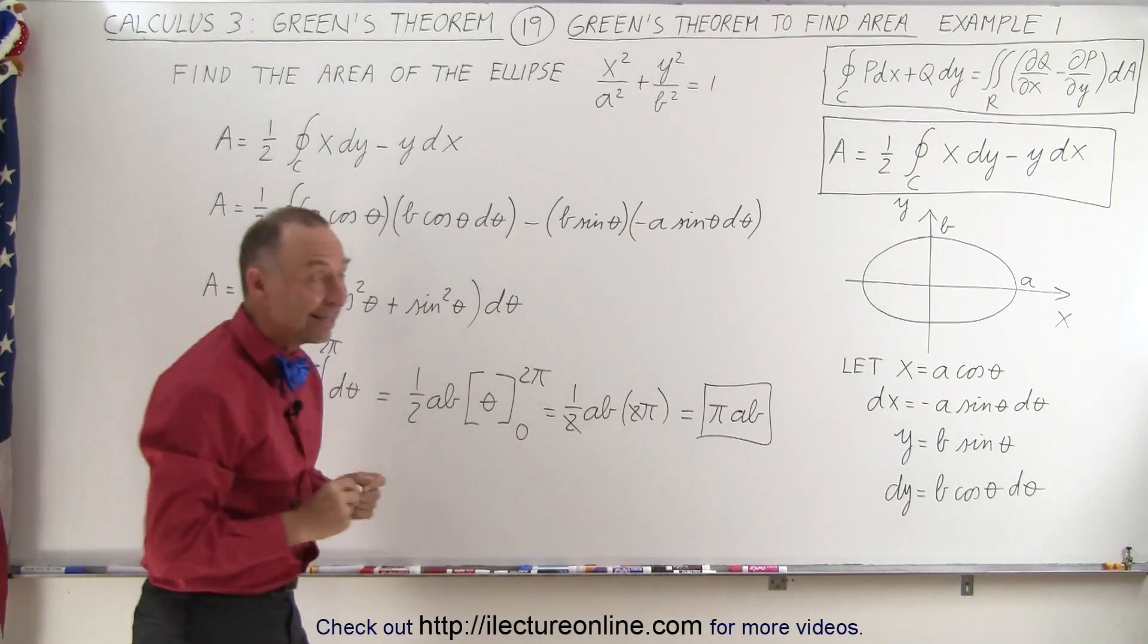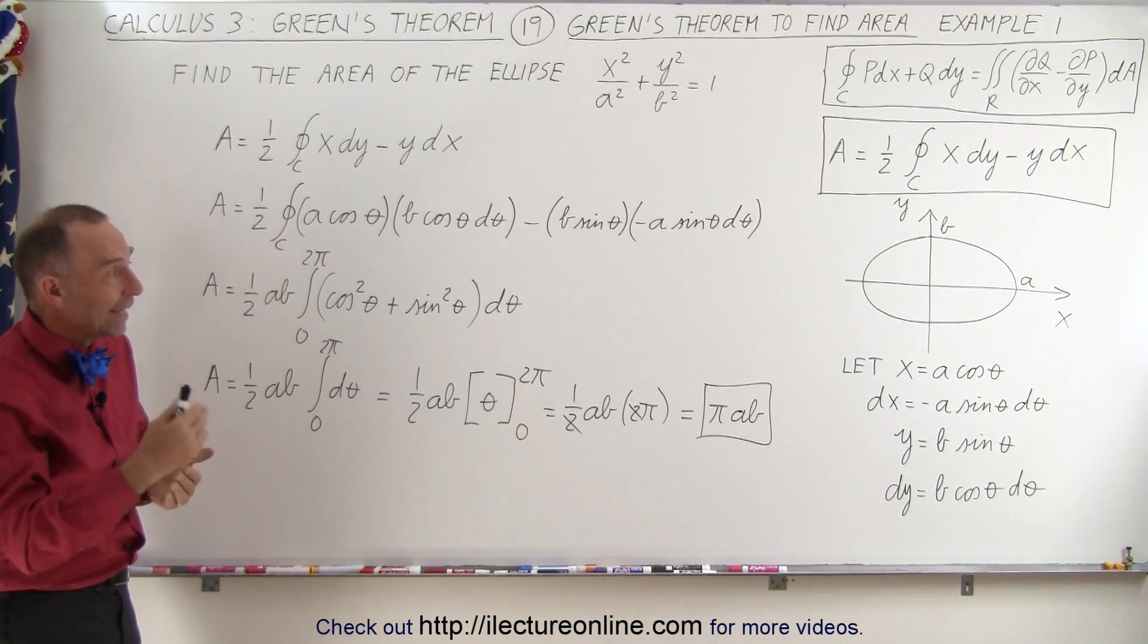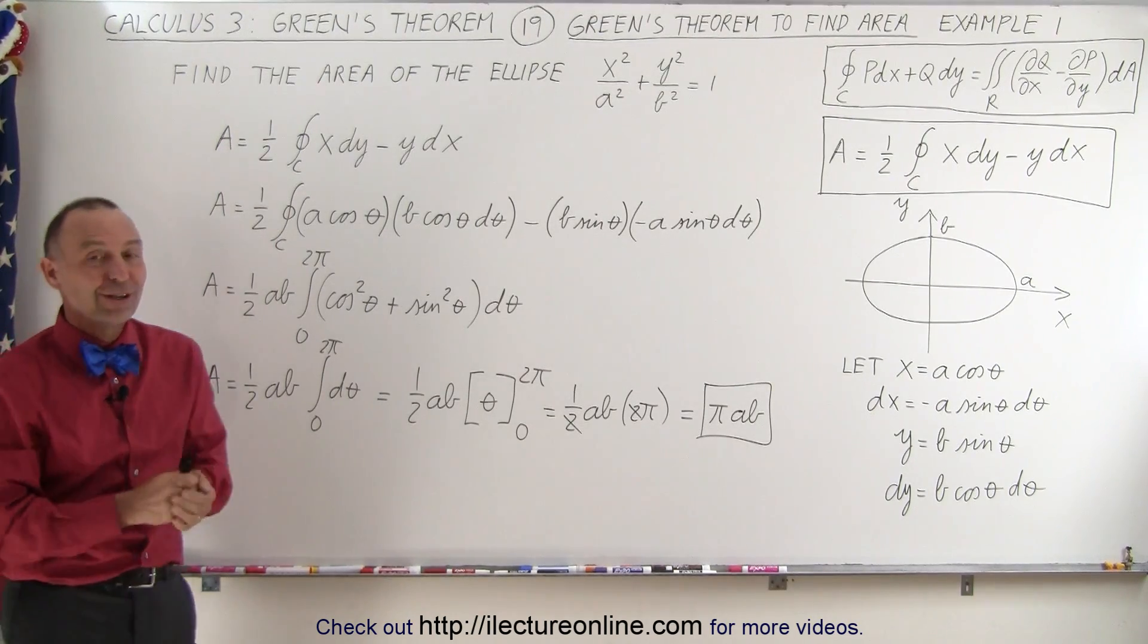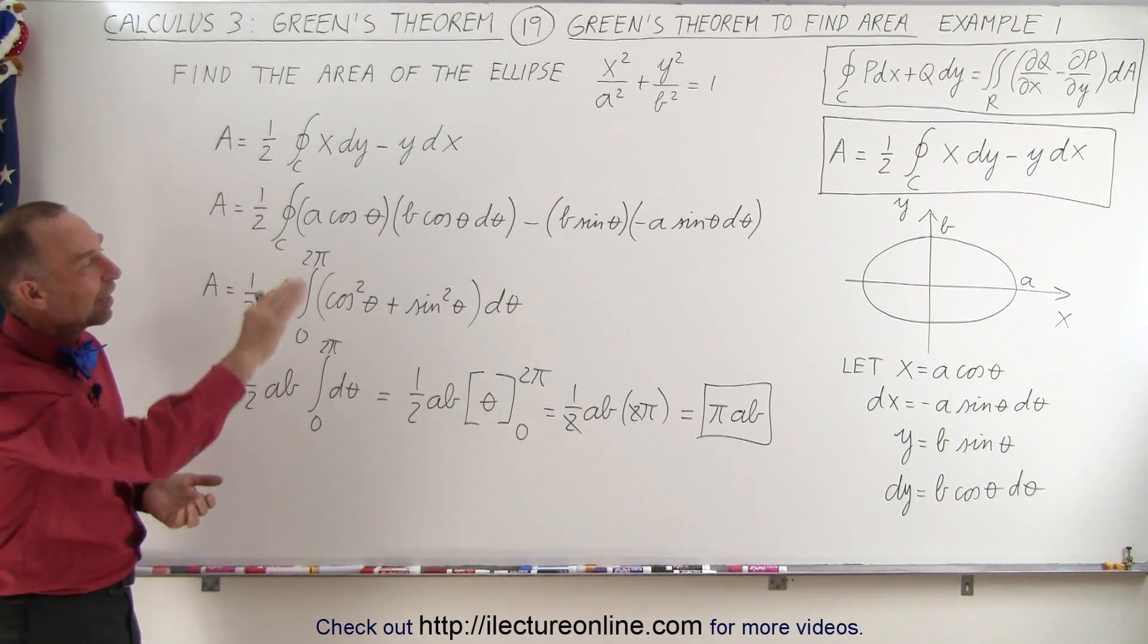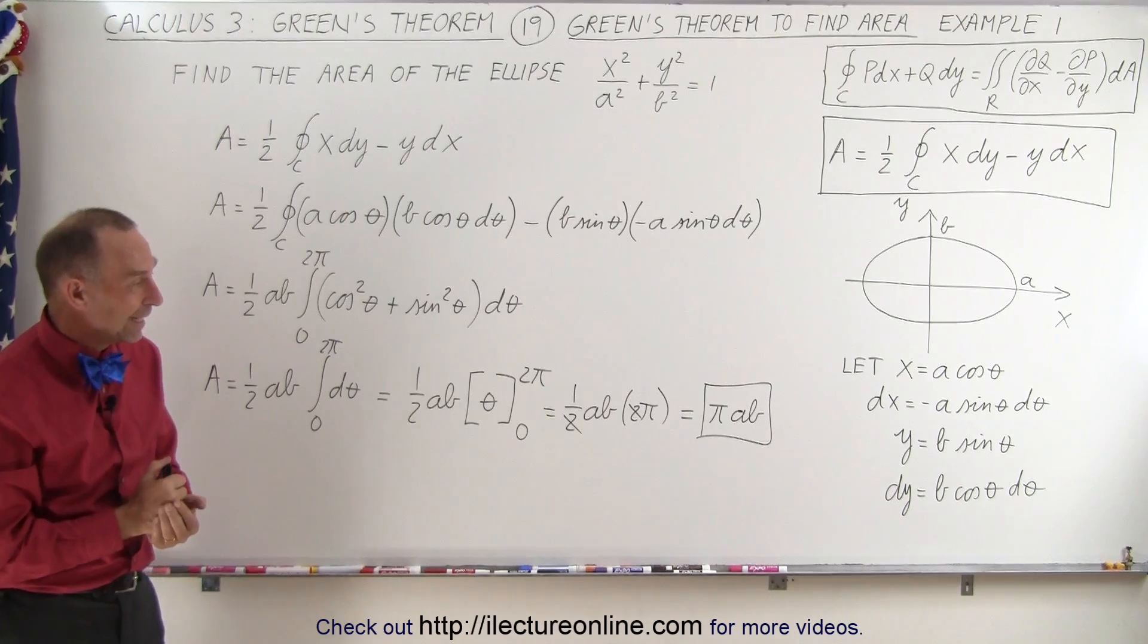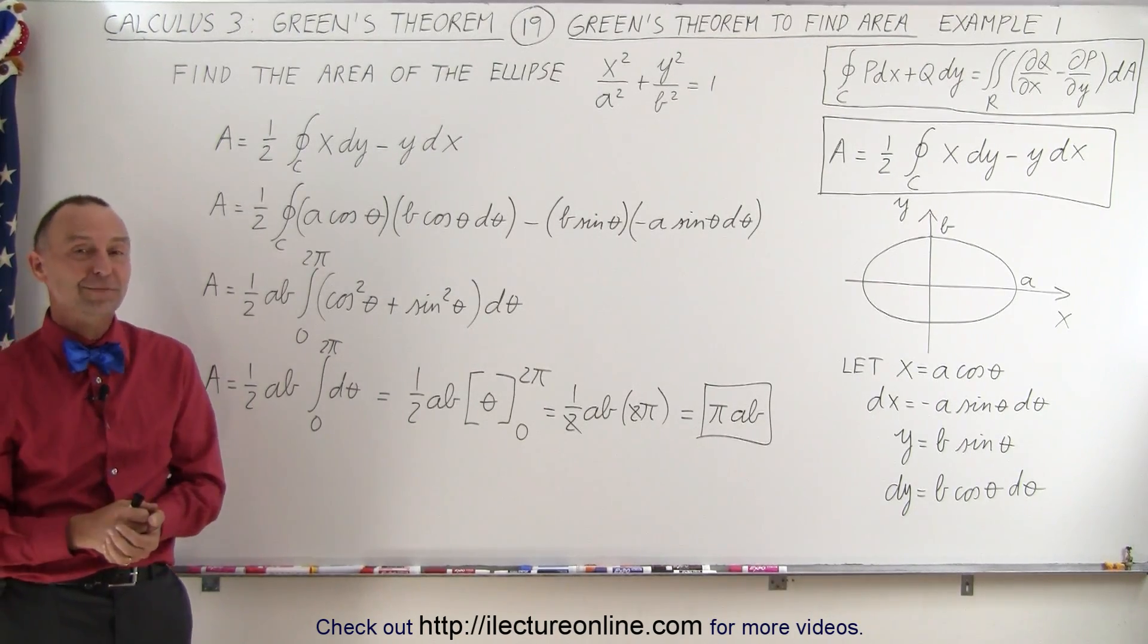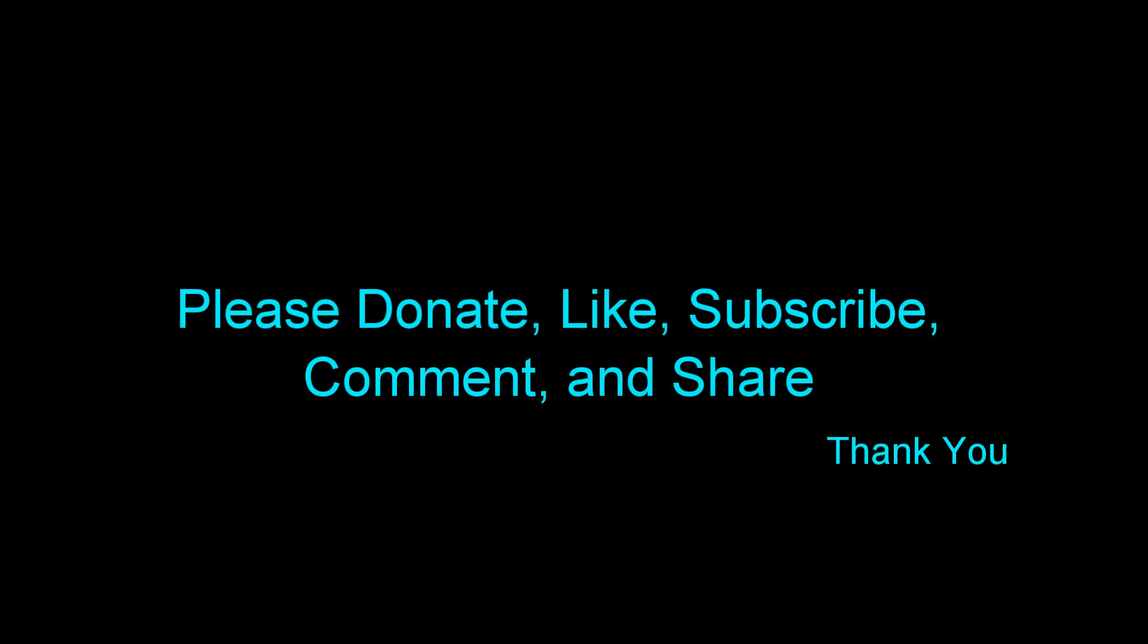And notice that is indeed the area of an ellipse where the constants are a and b. Wow, this is so much easier than using the typical way of integrating over the area of an ellipse. So notice Green's theorem is really a nice theorem that is applicable to a lot of different things, this being one of them. Thank you.